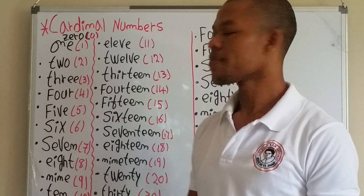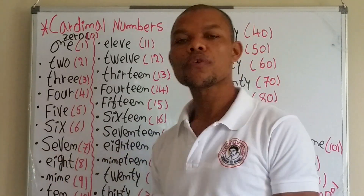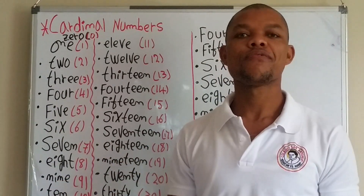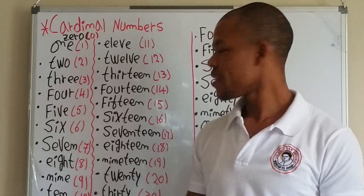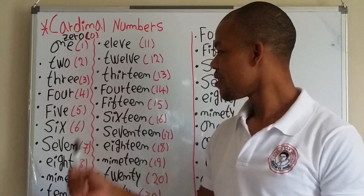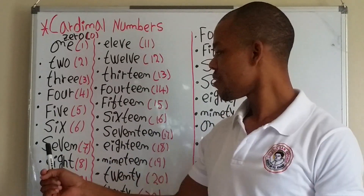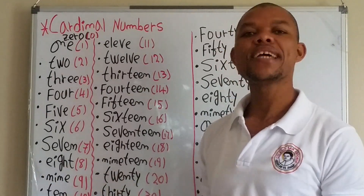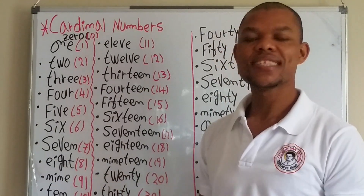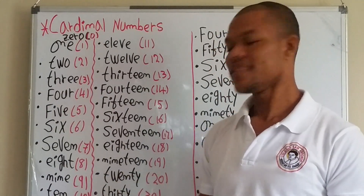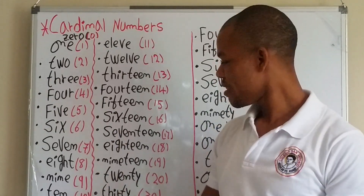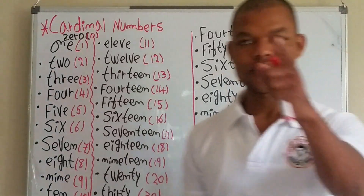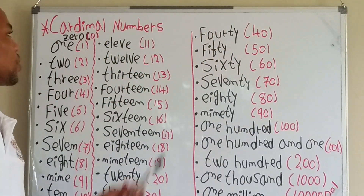Three. Three. Four. Four. Five. Five. Six. Six. Seven. Seven. Eight. Eight. Nine. Nine. Ten. Ten.